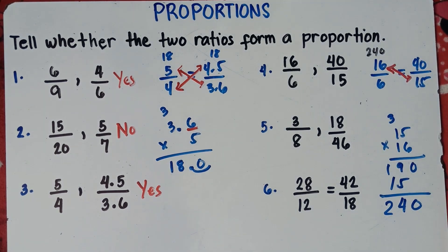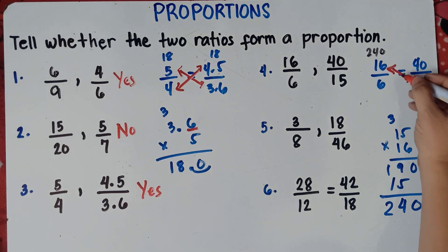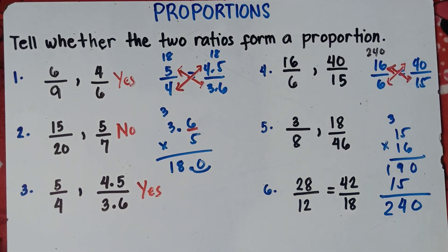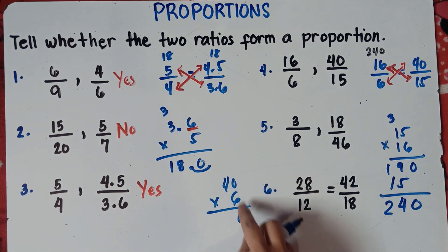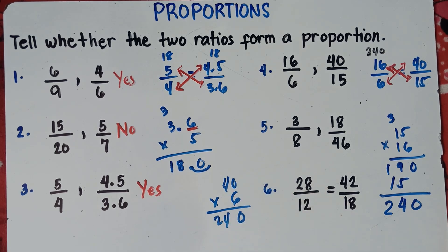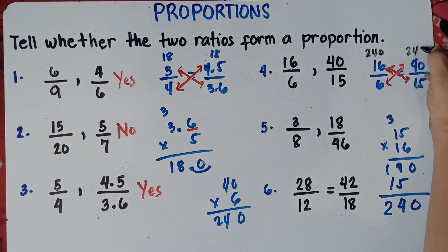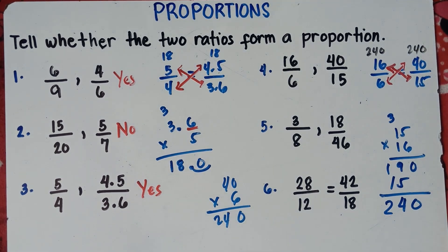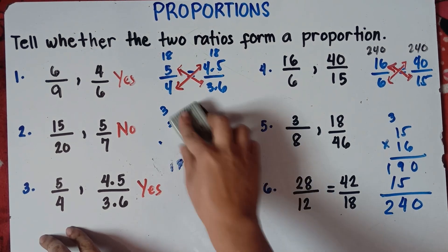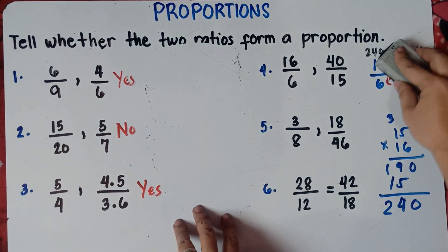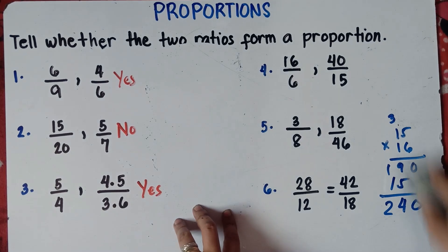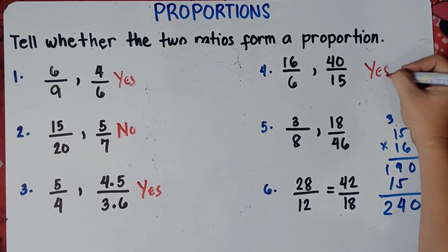Now let's check by multiplying 40 and 6. 6 times 0 is 0; 6 times 4 is 24 — so 240. Same answer! Therefore, for number 4, our answer is yes — a big yes for number 4.